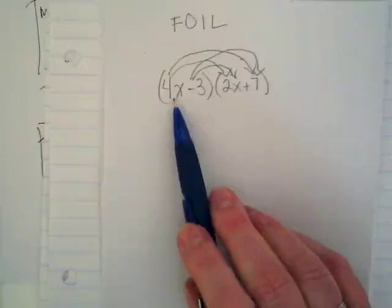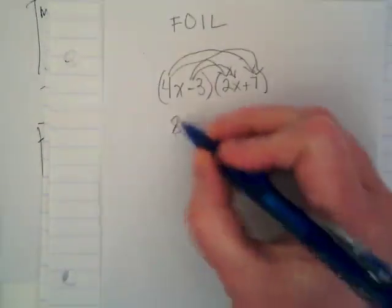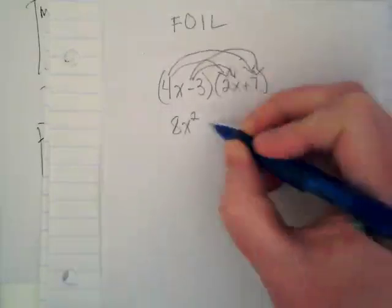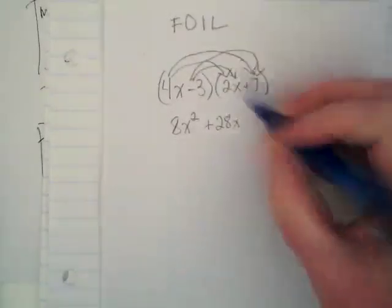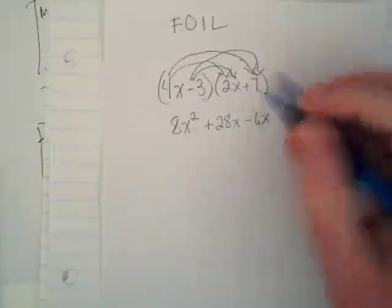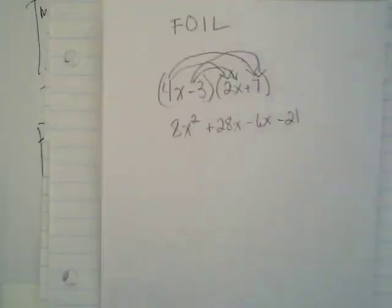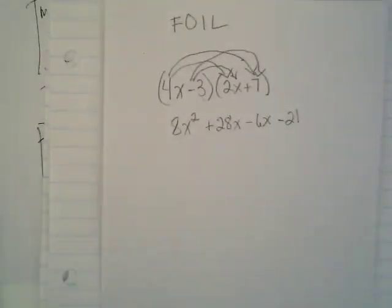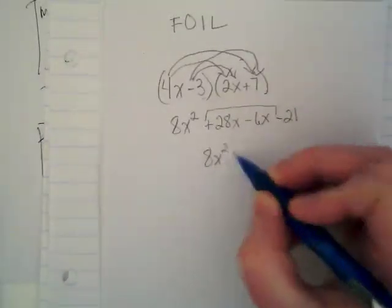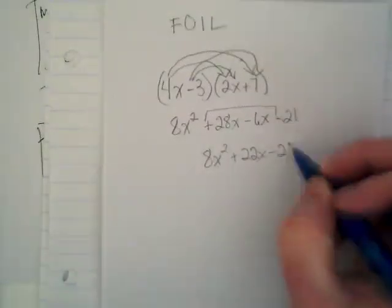So here is our first term. 4x times 2x is going to give us 8x². I also, as a struggling algebra student, would forget the x² part of this because I was following so many arrows trying to make sure I was keeping track of everything. And then 4x times 7 gives me 28x. -3 times 2x gives me -6x. And -3 times 7 gives me -21. Are we getting the same numbers that showed up in our boxes? Can you see how this could get lost though? And now I need to combine my like terms, which are here, and I get 8x² + 22x - 21. And there's my answer.